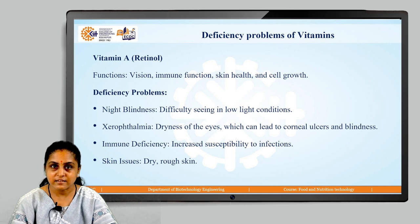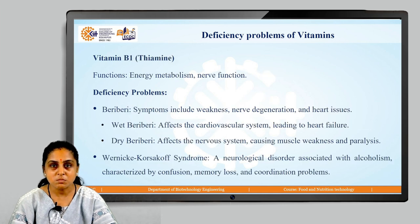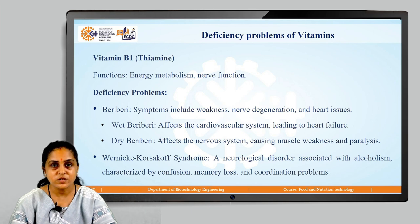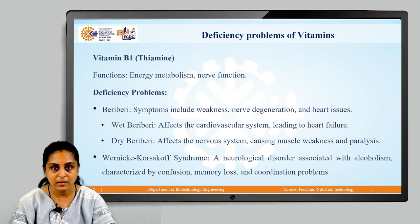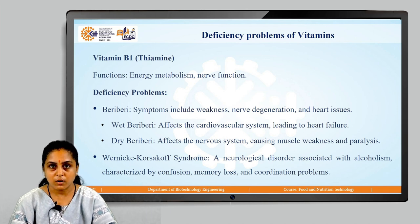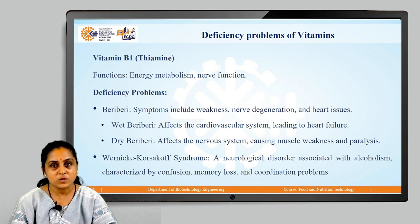Let us move on to the next vitamin, which is vitamin B1, also known as thiamine. The functions of vitamin B1 are: it helps in energy metabolism processes in our body and nerve functioning in our body. What are the deficiency problems with respect to vitamin B1 or thiamine?